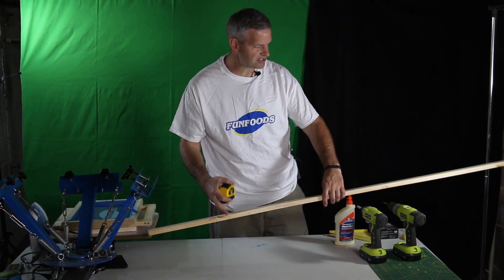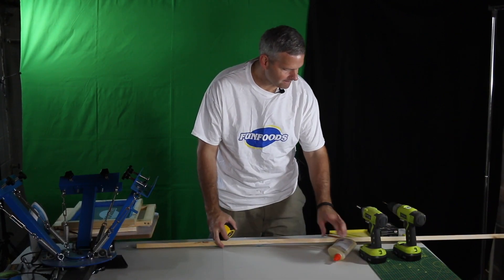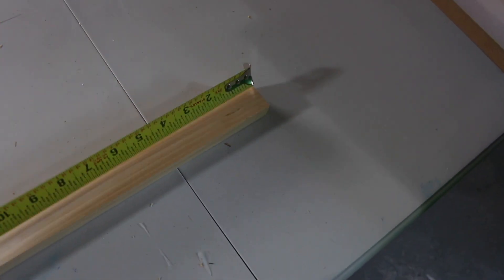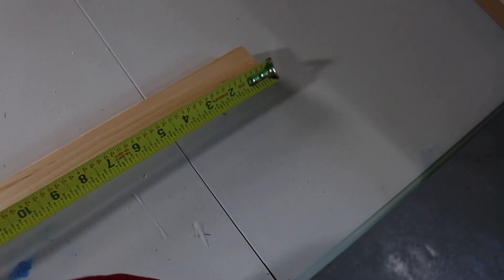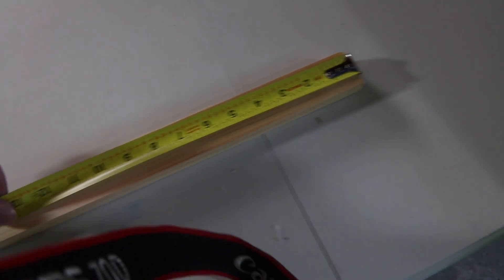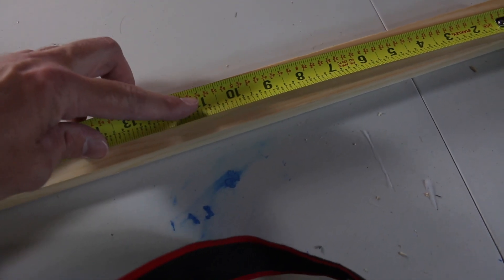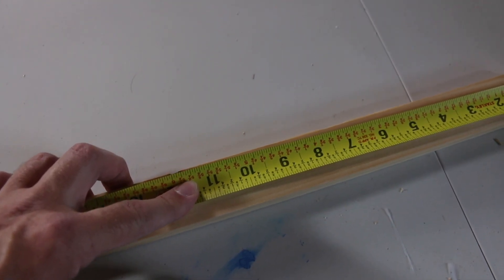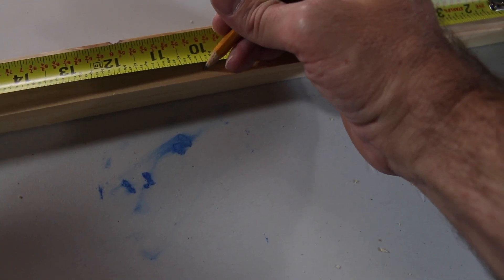So just take your tape measure. All right so with our tape measure we just want to measure out 10 inches. It's hard to do with one hand but measure out 10 inches and we'll draw a line with a pencil. So here's our 10 inch mark.